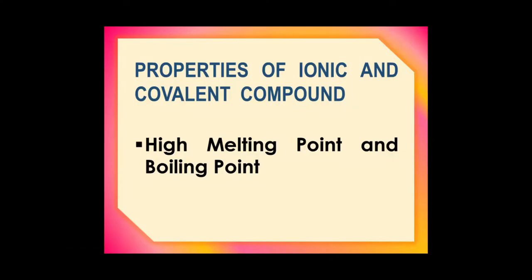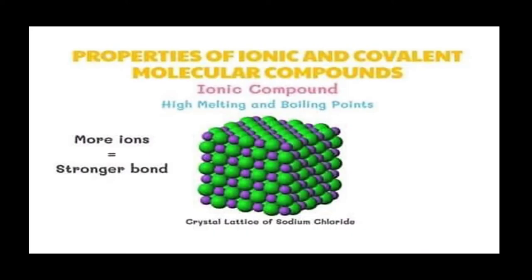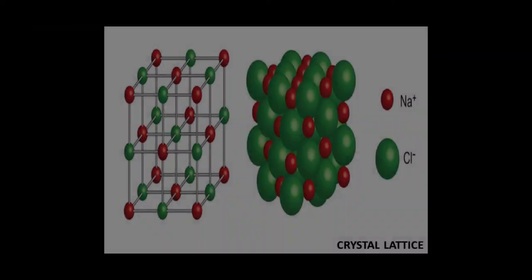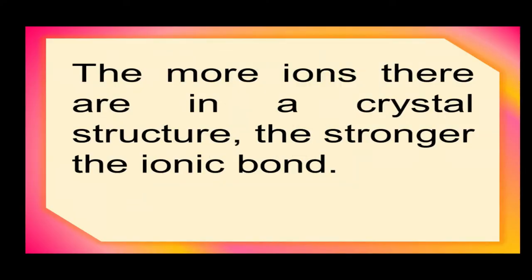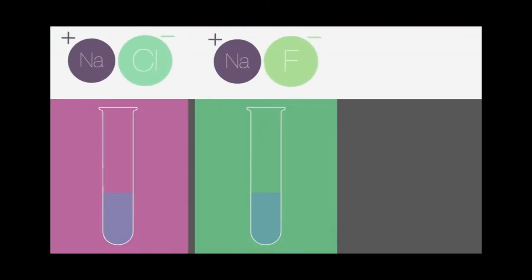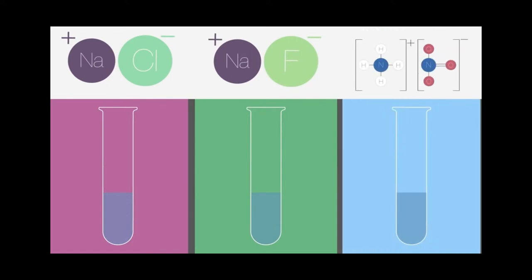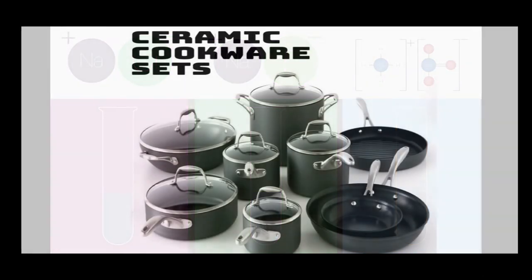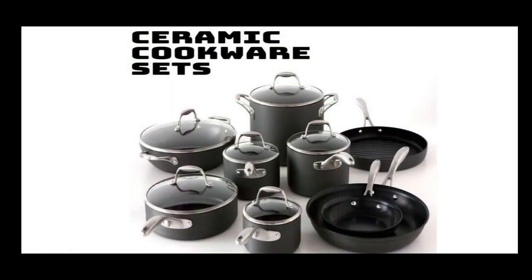Ionic compounds have very high melting and boiling points. The force of attraction that holds the negative and positive ions together is very strong. The more ions there are in a crystal structure, the stronger the ionic bond. Therefore, these compounds require a high temperature to melt and boil. Ceramics, which are made of ionic compounds, are an effective heat-resistant material suitable for cookware.